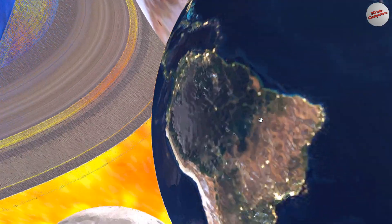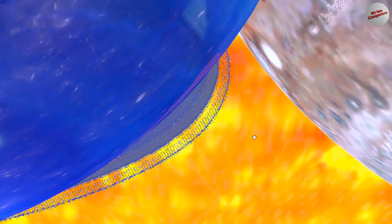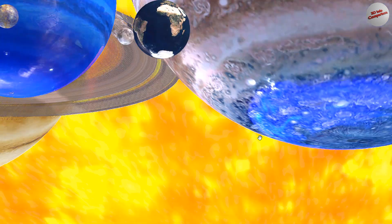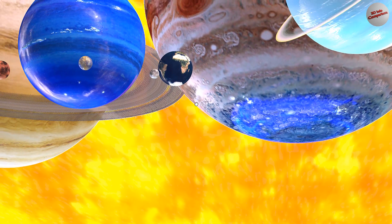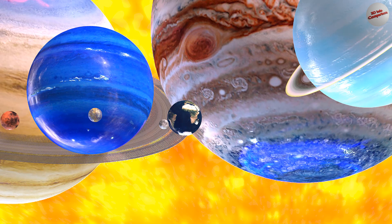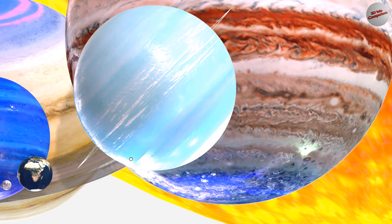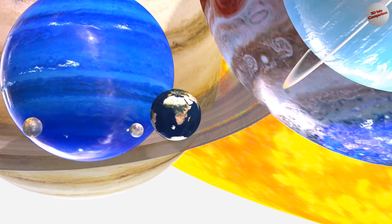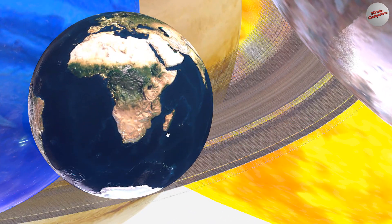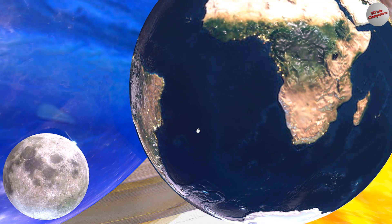Earth is the third planet from the Sun, and is the only known planet to support life. It has a diameter of approximately 12,742 kilometers, and is composed of rock, water, and air. Earth's atmosphere is composed mostly of nitrogen and oxygen, and it has a magnetic field that protects the planet from harmful solar radiation.